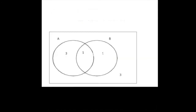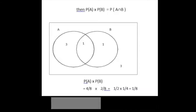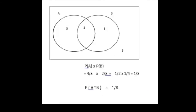Let's look at this again for sets A and B on the Venn diagram shown. The probability of A is 4 out of 8, and the probability of B is 2 out of 8. A half times a quarter is 1/8, and the probability of A-intersection B is also 1/8, so A and B are independent.